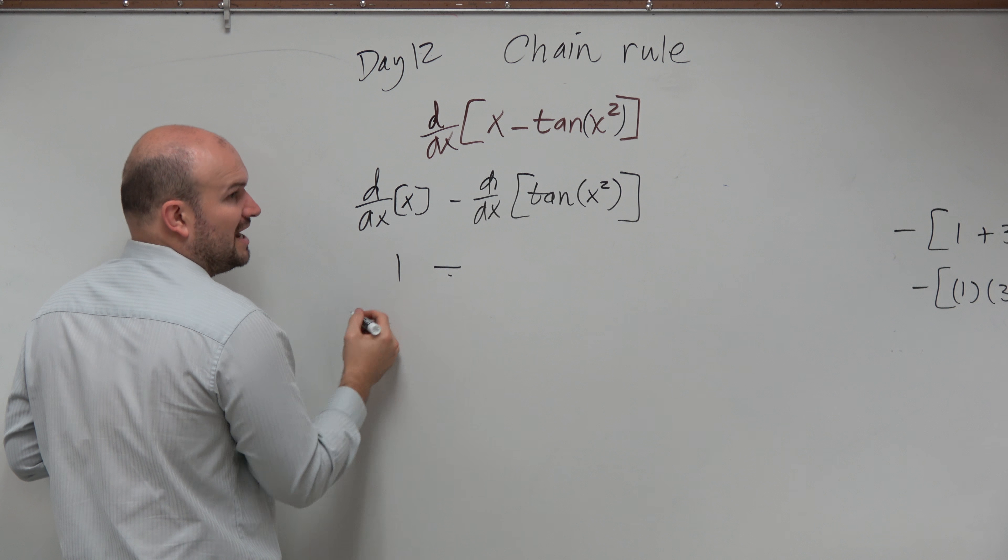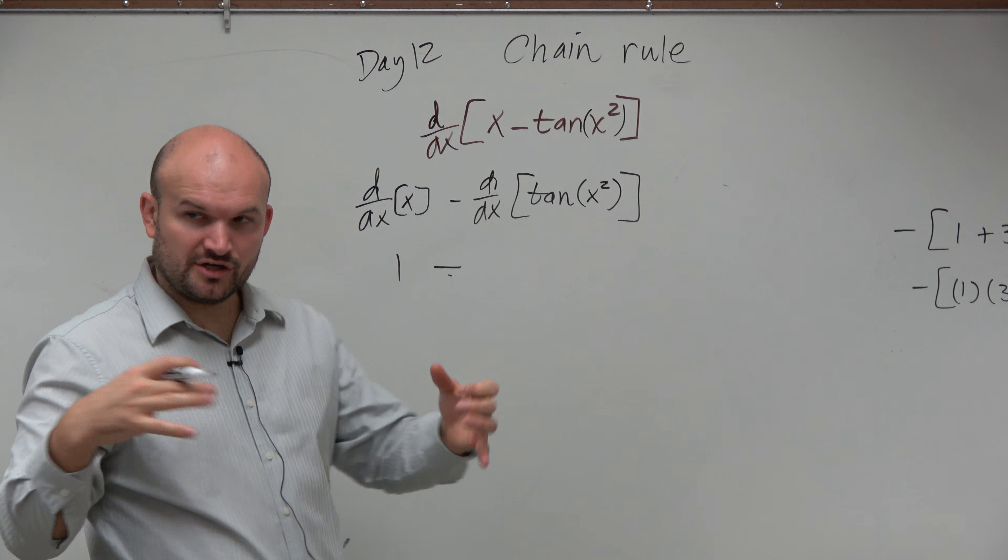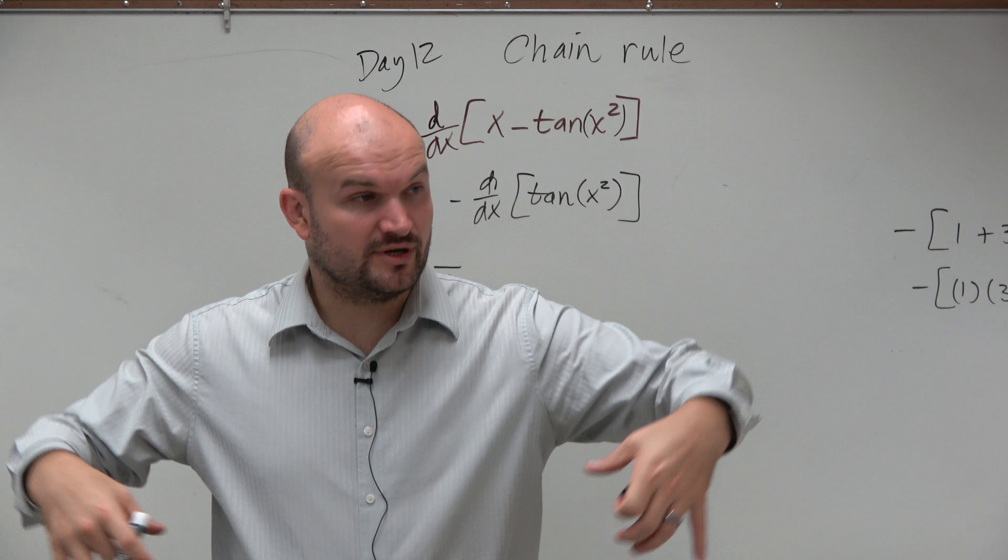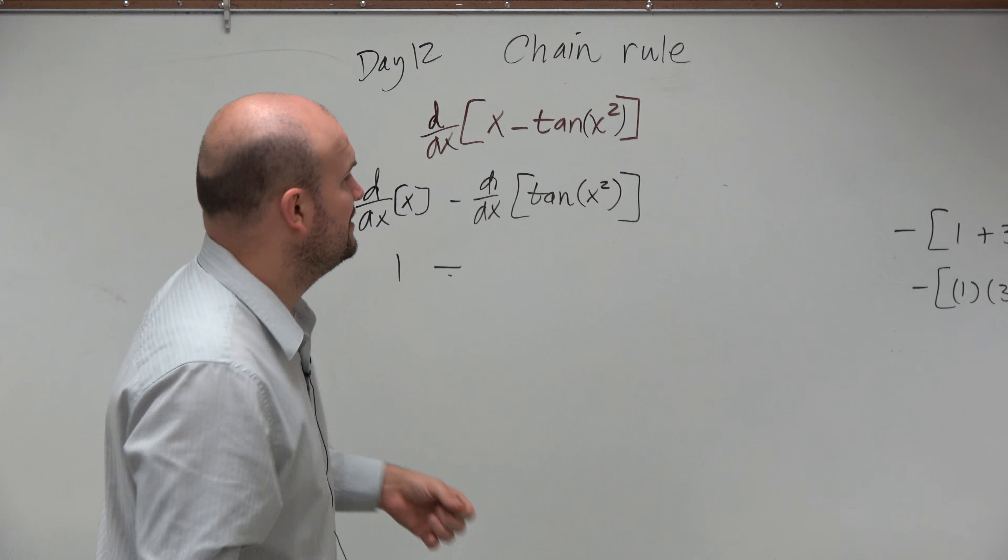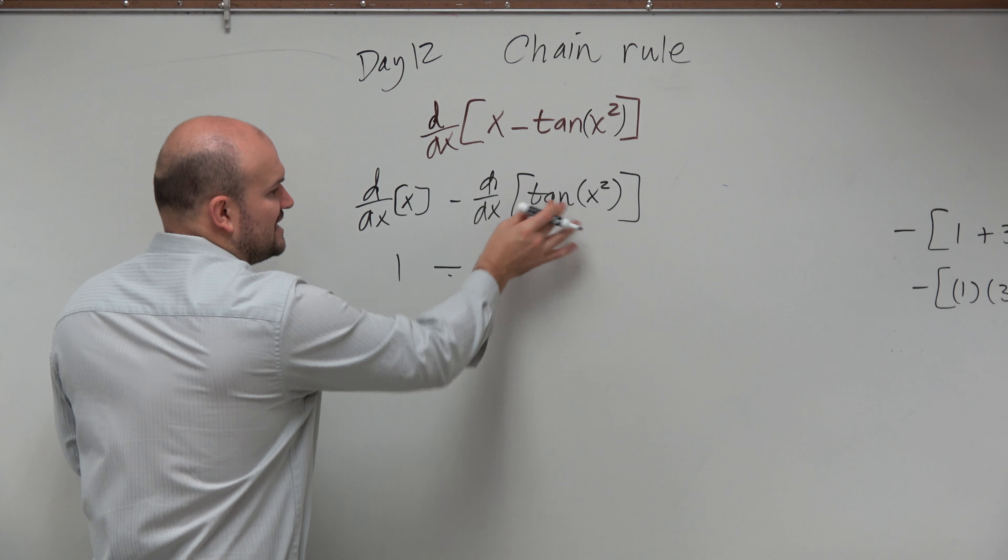Best thing, ladies and gentlemen, is to understand that we have to take d/dx of x and then minus d/dx of tangent x squared. Obviously, this isn't that bad. That's just 1.